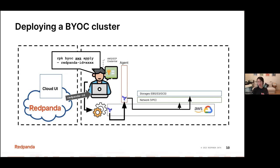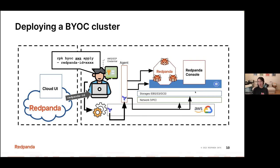The agent sets up networking — the right subnets, VPCs — and provisions storage. Because we want flexibility to add nodes in the future, we install everything on top of Kubernetes. After that, we install the Red Panda cluster within the Kubernetes cluster, along with Red Panda Console — a useful tool that lets users see what's going on inside their cluster — plus other small artifacts and utilities. Once the deployment is kicked off, the user gets to see their entire cluster running in their environment.